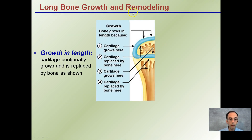For long bone growth in length, the cartilage continually grows and is replaced by bone. Cartilage grows at the outer regions, then is replaced by bone at this distinctive line in the more central portion of the long bone. This growth in length occurs because we are replacing cartilage through the ossification process with bone, causing that bone to grow in length.